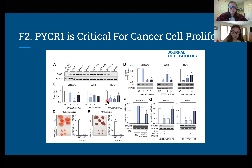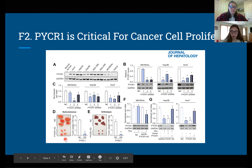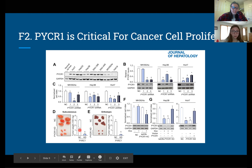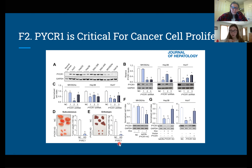Figures 2D and 2E show actual tumors in animals — mouse subcutaneously in D, and rat orthotopically in E. In the control, there are much larger tumors. With PYCR1 knockdown, there was a significant decrease in tumor size. The graphs on the side show tumor growth: white bars represent the control and blue bars represent the smaller knockdown tumors.